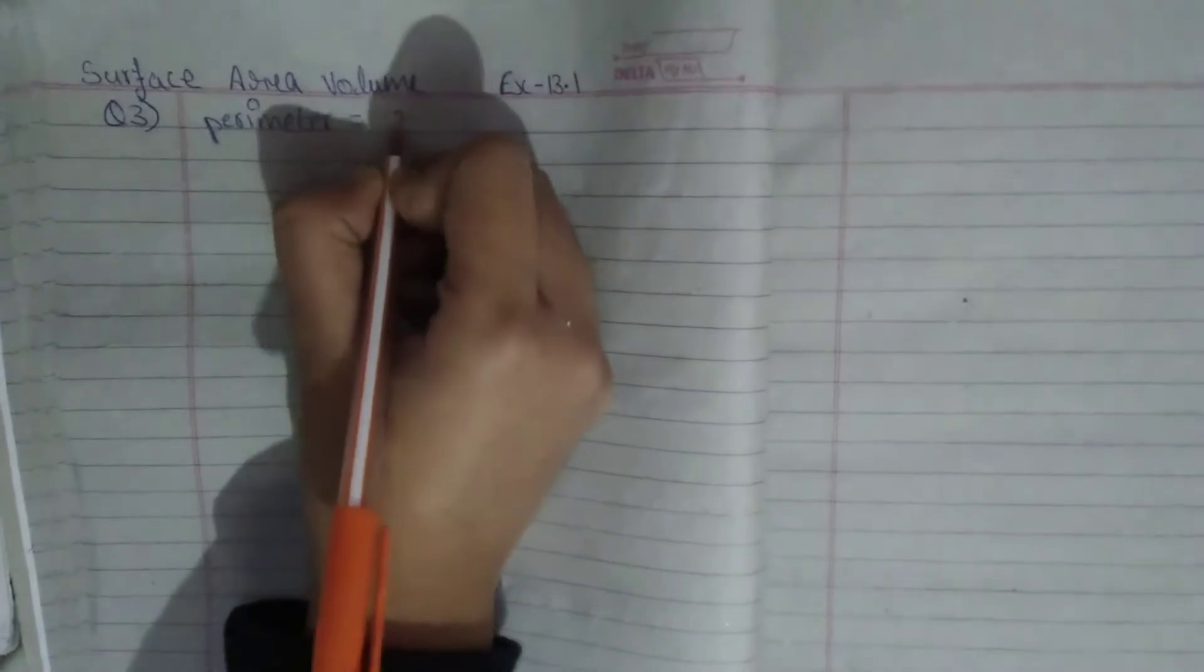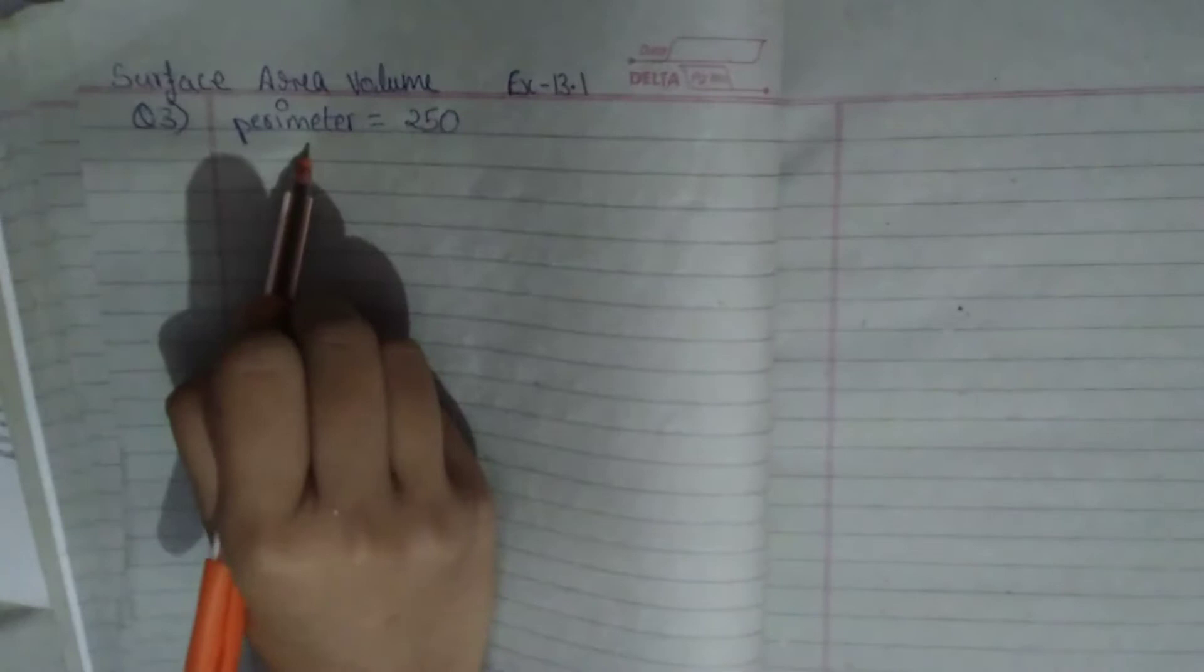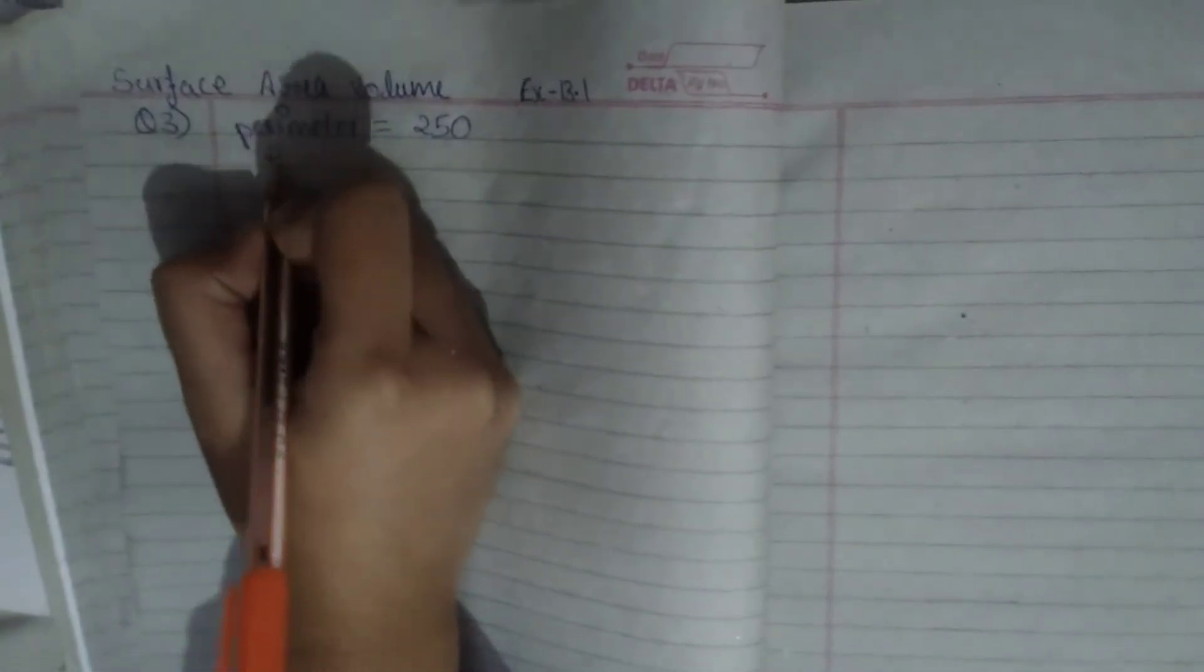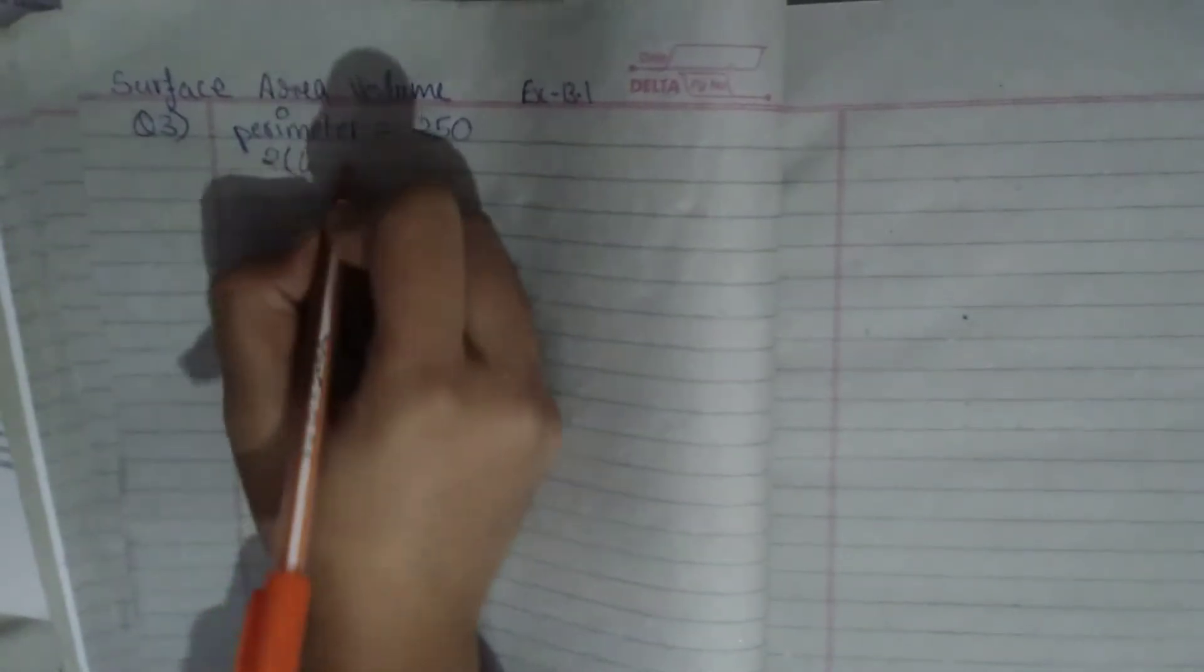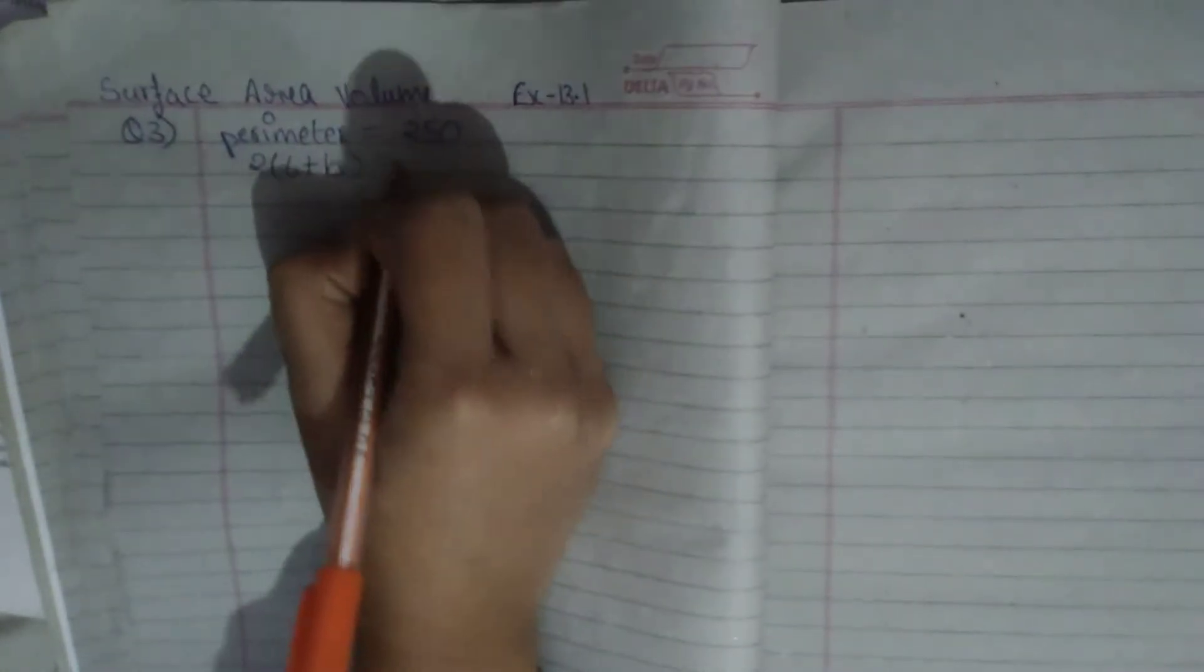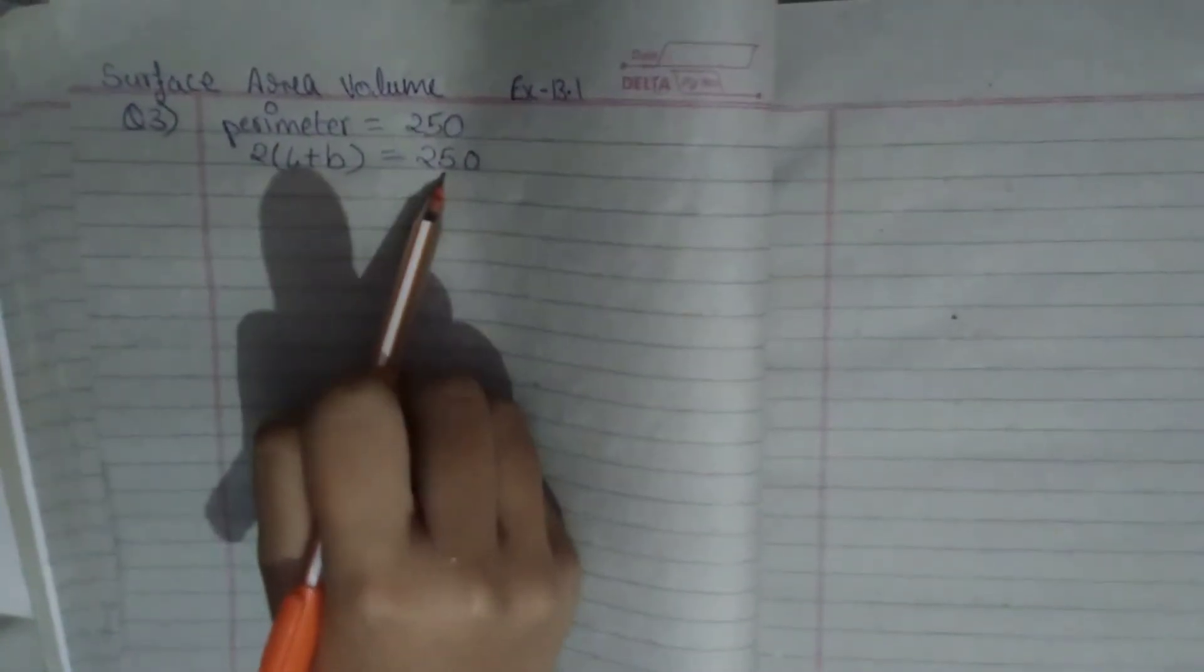In the question, the perimeter is given as 250 and the formula to find the rectangle's perimeter is 2 into L plus B, which is equal to 250.